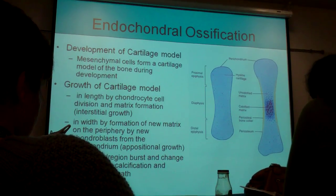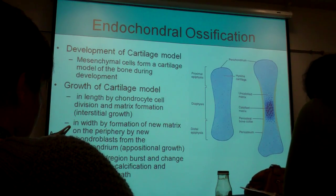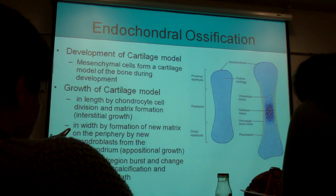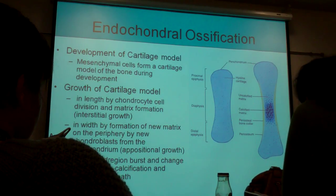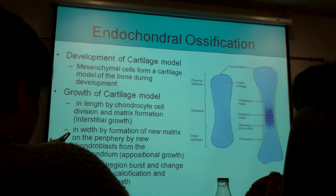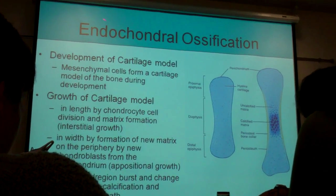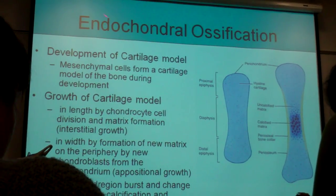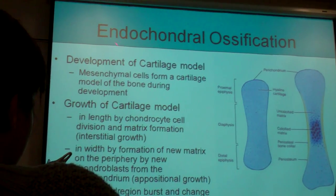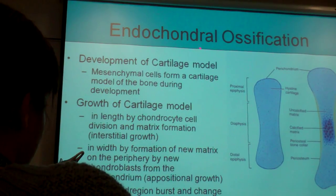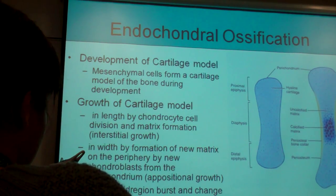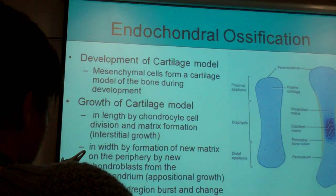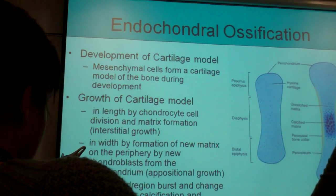Endochondral ossification — look at that word: endo, within; chondral, cartilage. Endochondral ossification starts with cartilage, and it has three quick and easy steps. It starts from connective tissue.